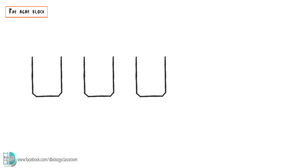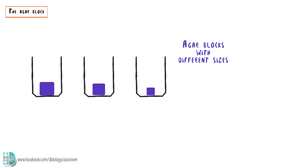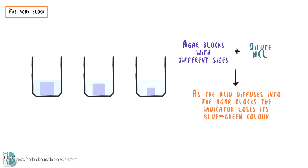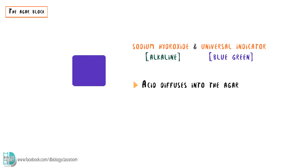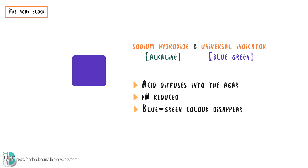This investigation involves placing different sizes of blue-green agar blocks into dilute hydrochloric acid. As the acid diffuses into the agar blocks, the indicator loses its blue-green color, and we will record the time taken for the color to disappear. The blue-green agar blocks contain sodium hydroxide and universal indicator. Sodium hydroxide is alkaline, and that gives the indicator a blue-green coloration. As acid diffuses into the agar blocks, it reduces the pH and leads to the disappearance of the blue-green color.